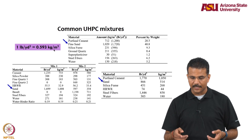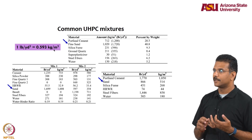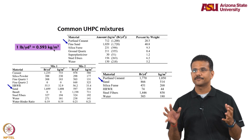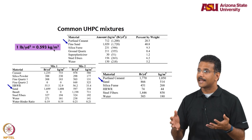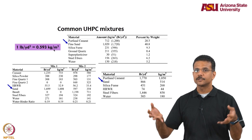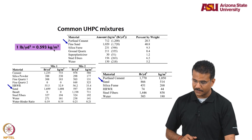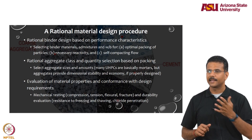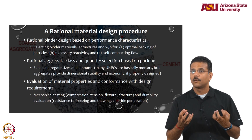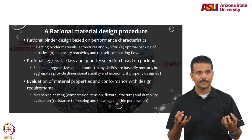Commercial mixes also use a lot of other fine powders such as silica fume, ground quartz, and various types of fine powders to ensure a wider particle size distribution that fills all the pores. This is the general background behind existing UHPC mixtures. The question is: how do we design this material from first principles?